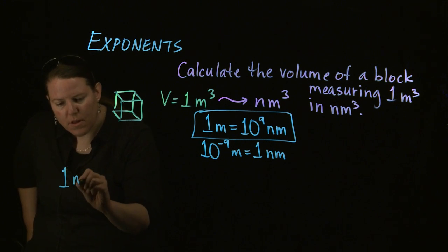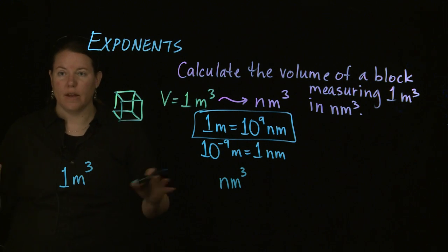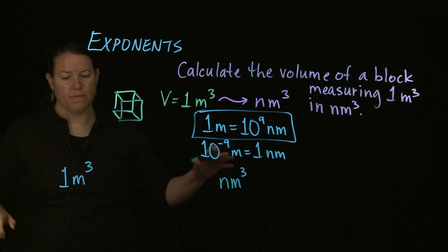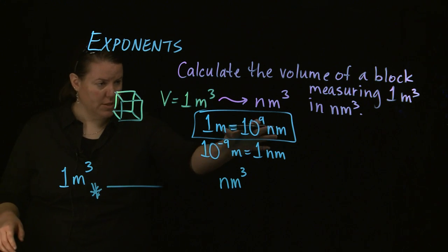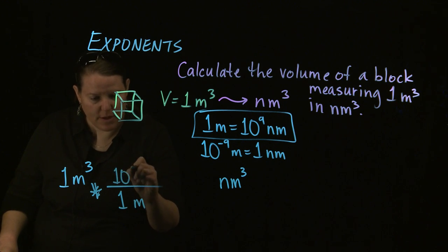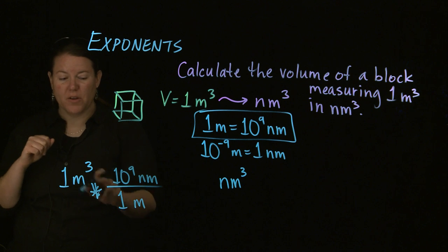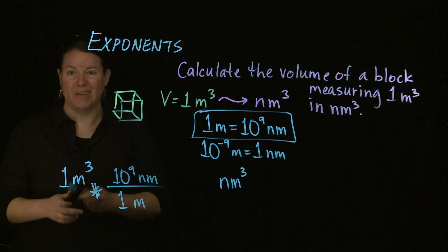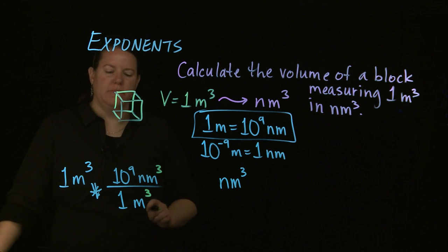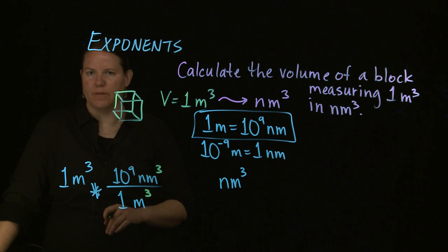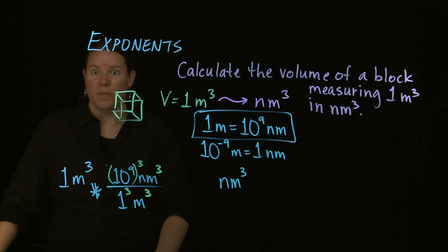Knowing the volume is one meter cubed and I want it in nanometers, in every one meter there are ten to the ninth nanometers. But does one meter cubed and one meter cancel out? No, it doesn't. When you cube the units, you better be cubing everything. Don't just cube the units and expect things to be fine — cube everything.